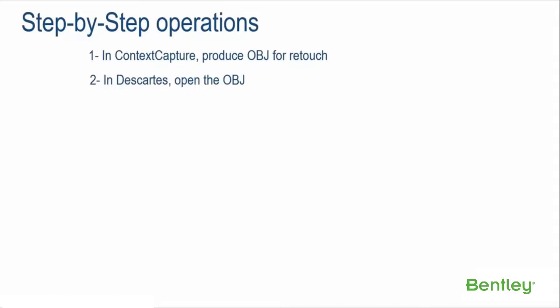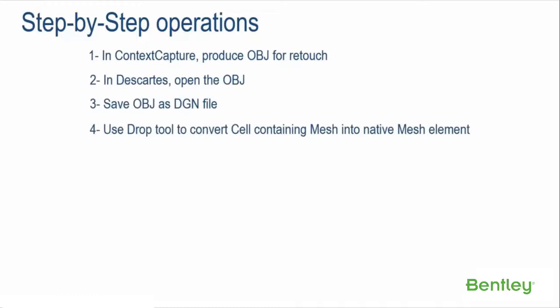Step 2: In Descartes, open the OBJ. Step 3: Save OBJ as DGN file. Step 4: Use Drop Tool to convert cell-containing mesh into native mesh element.